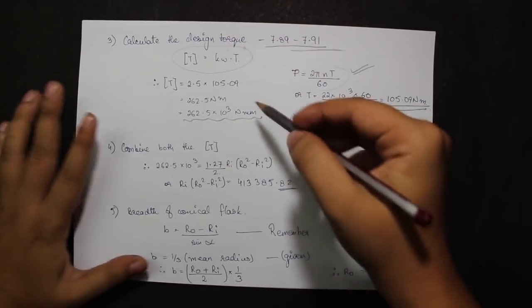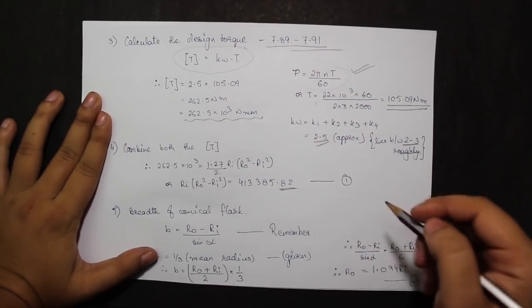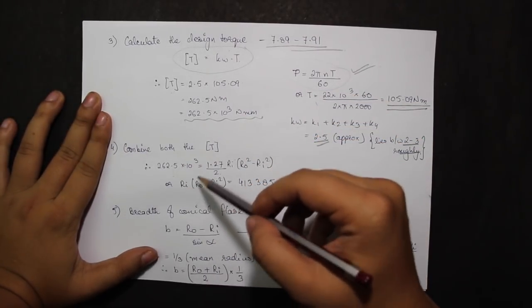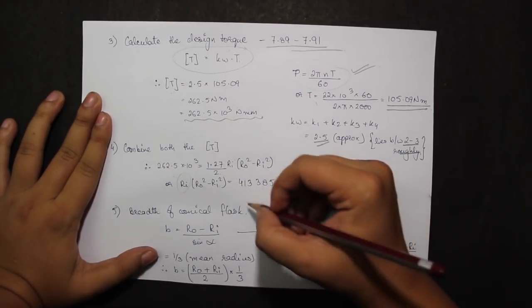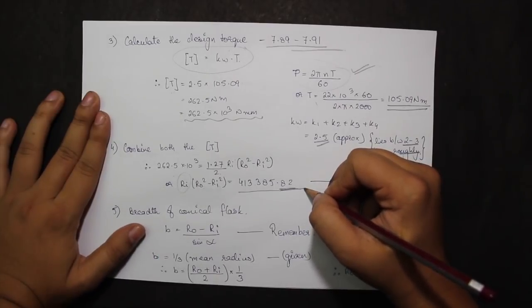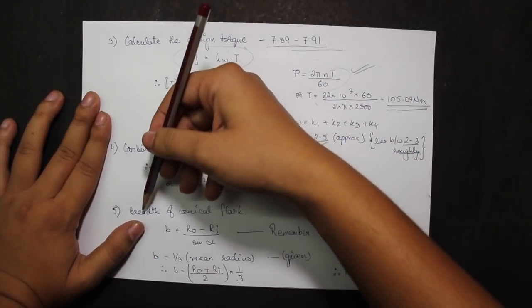Combining both the values for design torque from steps 2 and 3, I get the value for r0 square minus ri square into whole ri.